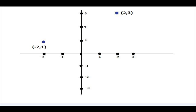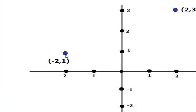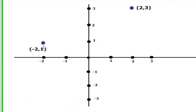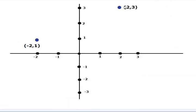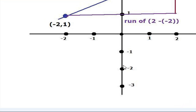We shall obtain the equation of a line that passes through two given points: negative 2, 1 and 2, 3. We are going to obtain the equation of this line and let's try the slope-intercept form first.